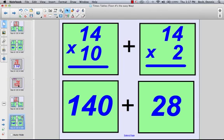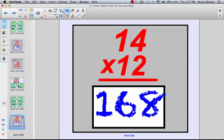14 times 10 gives you 140. Remember, anytime you take a number times 10, you just simply add a zero at the end. And then 14 times 2 will give you 28, and together they combine to make 168.